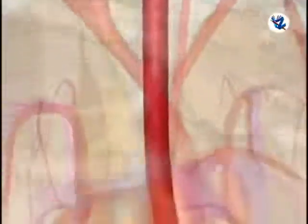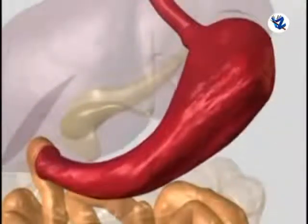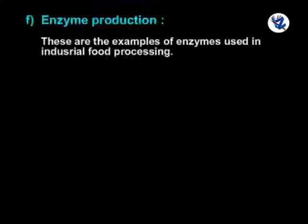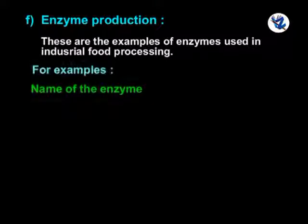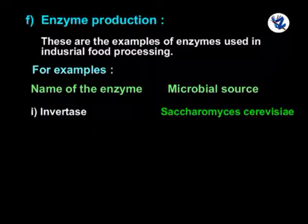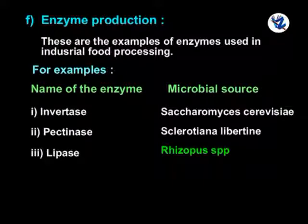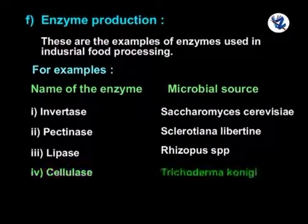Enzyme production: enzymes are biocatalysts which either initiate or accelerate all biochemical processes in living organisms. The following enzymes are used in industrial food processing with their microbial sources: Invertase from Saccharomyces cerevisiae; Pectinase from Sclerotinia libertiana; Lipase from Rhizopus spp.; and Cellulase from Trichoderma koningii.